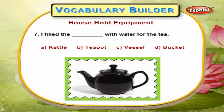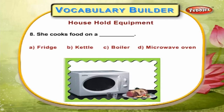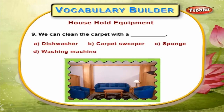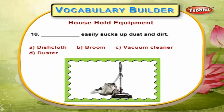I filled the teapot with water for the tea. She cooks food on a microwave oven. We can clean the carpet with a carpet sweeper. Vacuum cleaner easily sucks up dust and dirt.